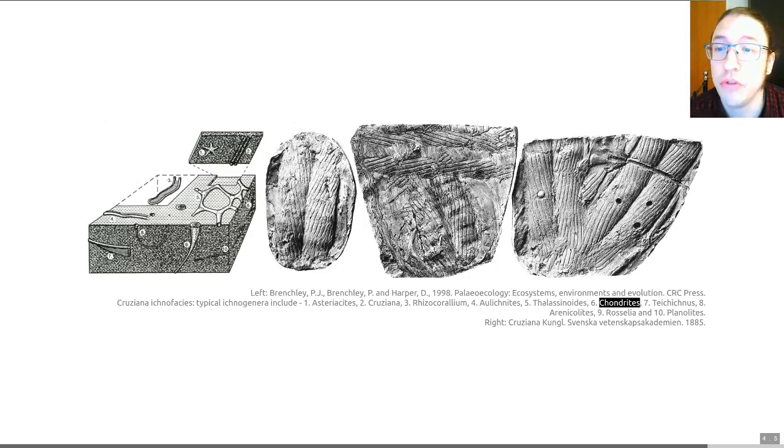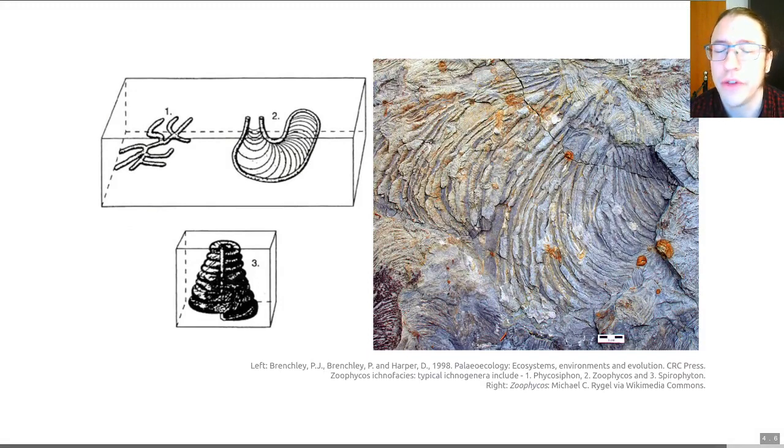Zoophycos. This ichnofacies represents quiet water, presumably with adequate nutrient conditions. We're typically talking about deep shelf to upper continental slope, deep water settings. But we sometimes see this in shallower or deeper water environments with similar environmental conditions, so for example lagoons. The Zoophycos ichnofacies includes a number of genera, of which I've put an example of Zoophycos itself on the right hand side here. This is this kind of fan-shaped burrow that you can see in these rocks. It's a facies that's dominated by complex but efficient feeding and grazing trails of deposit feeders, and it's relatively common throughout the Jurassic, Cretaceous, and the Tertiary of Europe.